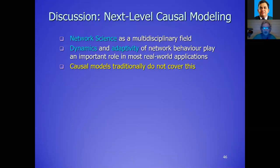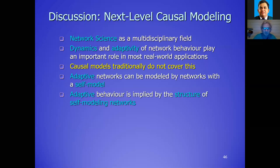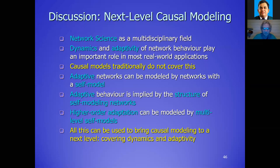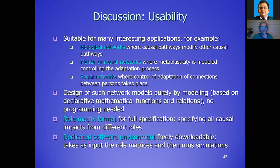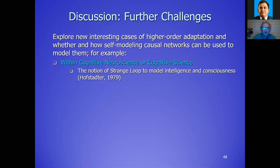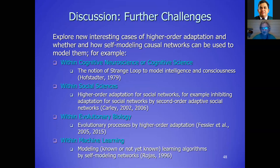In summary, I have shown that network science ideas can be used to extend the causal modeling area with new possibilities for better applicability. There are many possible extensions still to be researched — higher-order adaptive modeling in particular is not common in the literature. This opens a new research area with many things still to explore. Thank you for your attention.